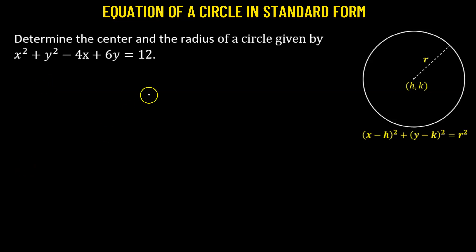In this problem, we need to determine the center and the radius of a circle, and we have the equation of the circle, x squared plus y squared minus 4x plus 6y equals 12. What we'll do is convert this particular equation to its standard form.